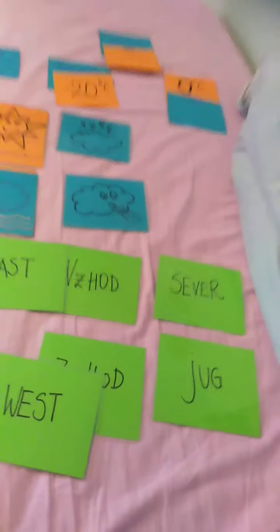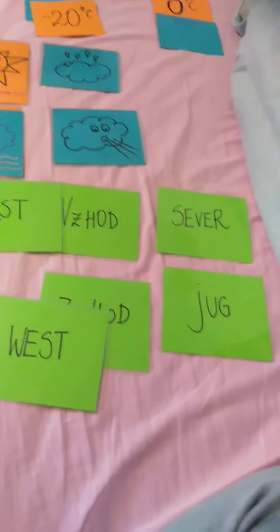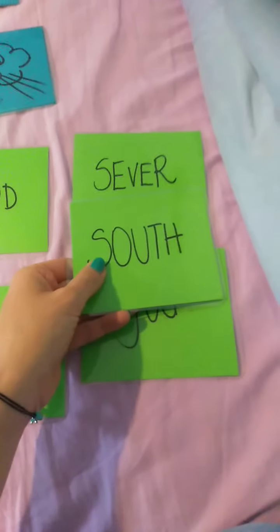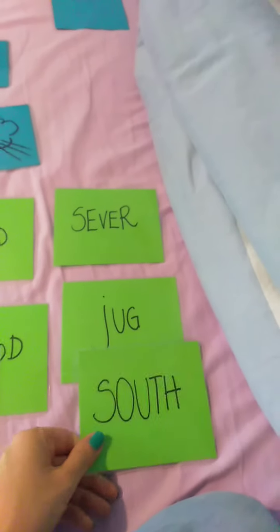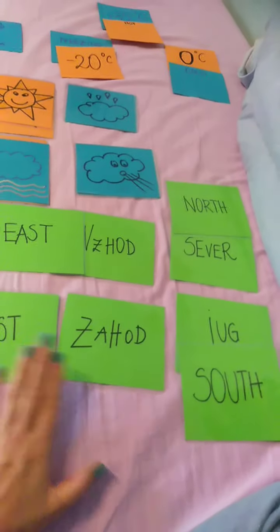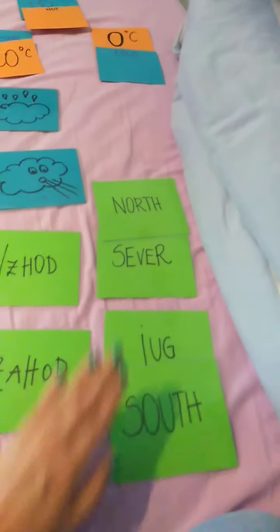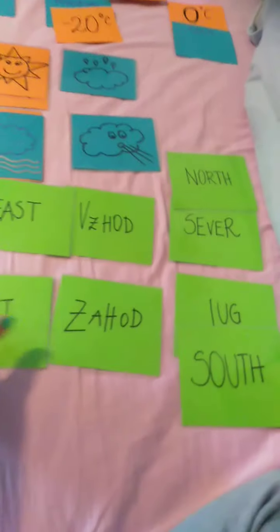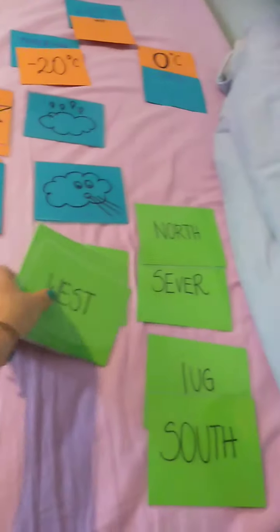Here is where most of the trouble usually is. I remember it because North and South both start with S - they never go together, so jug is South and sever is North. Zahod is West, vzhod is East. North - sever, South - jug. So these are the four main cardinal points.